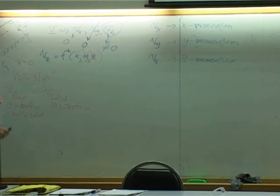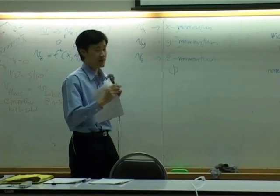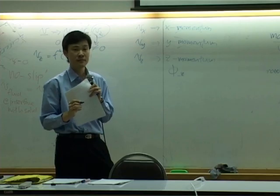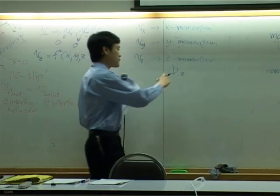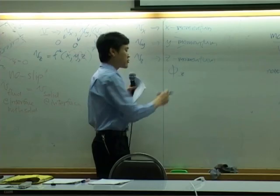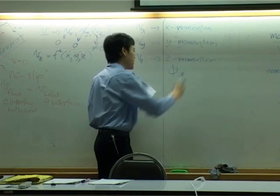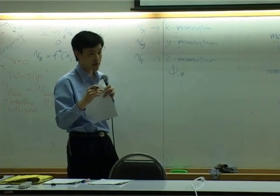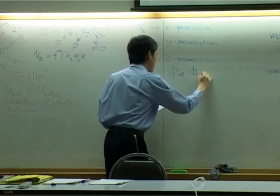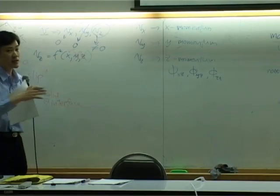Z momentum is associated with flux components having Z as the second subscript. The second subscript of the flux indicates the direction of velocity, and the first subscript is the direction of momentum transfer. So if we consider Z momentum, our nine components of momentum flux can be restricted to only three: Vxz, Vyz, and Vzz. These three describe Z momentum.